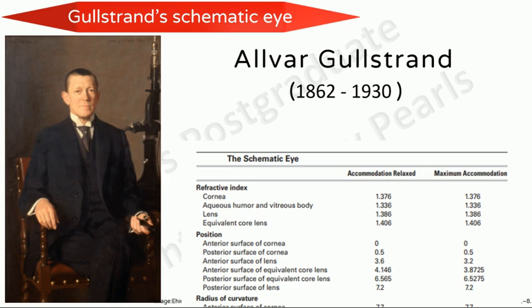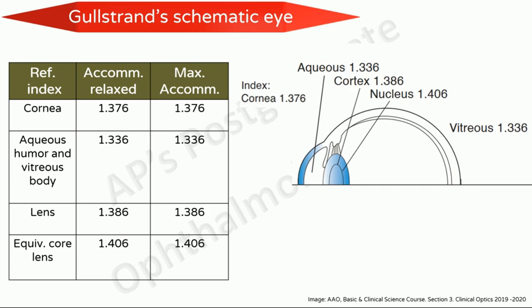All the measurements are given for both the non-accommodated and the fully accommodated eye. Here are the values for the refractive indices of the various refracting surfaces of the eye as determined by Gullstrand. The difference in refractive index of the medium on both sides of a refracting surface determines the degree of refraction, apart from the curvature. The refractive index of air is 1 and that of the cornea is 1.376. The difference in refractive index between the cornea and the air is the greatest — that is why maximum refraction occurs at the cornea.